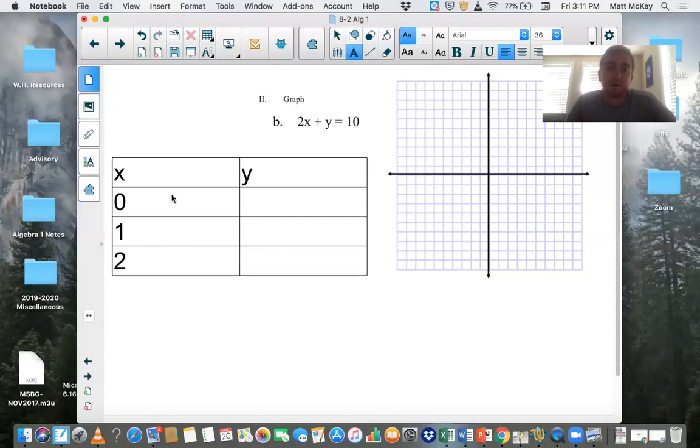So the first part, if we plug in zero for x, we have y equals 10. If we plug in one for x, we have two plus y equals 10, or y equals eight. And if we plug in two for x, we have four plus y equals 10, or y equals six. And again, each of these is an ordered pair. Zero, 10 is one ordered pair. You would plot that on the graph. One, eight is another ordered pair, and then two, six. And then connect the dots and make a line.